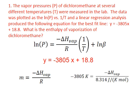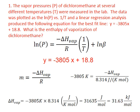We substitute what we know into this equation so that negative 3,805, the slope from the equation, is equal to the negative of the enthalpy of vaporization divided by 8.314 joules per kelvin per mole. We multiply both sides by 8.314 to get 31,635 joules per mole, then divide by a thousand to get 31.63 kilojoules per mole.